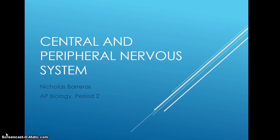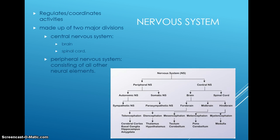This is the central and peripheral nervous system. The nervous system regulates and coordinates activities. It is made up of two major divisions: the central nervous system and the peripheral nervous system. The central consists of the brain and spinal cord, while the peripheral consists of all other neural elements.